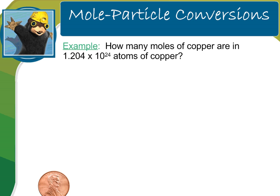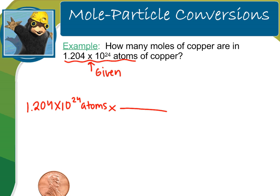Let's try a sample problem together. How many moles of copper are in 1.204 times 10 to the 24th atoms of copper? We're going to start with our given — you already know dimensional analysis, so you should know to start with the given. I'm going to start my problem with 1.204 times 10 to the 24th atoms, and I'm trying to convert to units of moles. I want to end up with moles and cancel atoms.